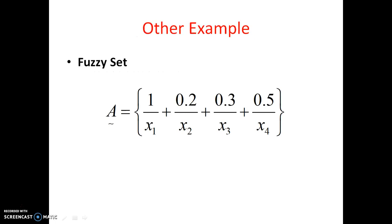Let me show one more example — a fuzzy set where A is a fuzzy set with an ampersand beneath the A. This is represented as equal to 1/x1 plus 0.2/x2 plus 0.3/x3 plus 0.5/x4. This type of equation can also be very easily typed in MathType software, so let us start working on it now.